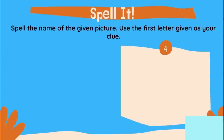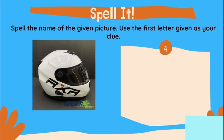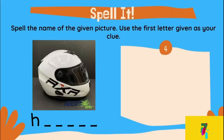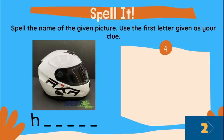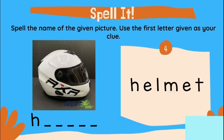Fourth picture. What do you call this one? It starts with letter H. What do you think is the correct word? Type now your answer in the comment box. And the correct word is helmet, H-E-L-M-E-T. Did you get this answer? Very good.